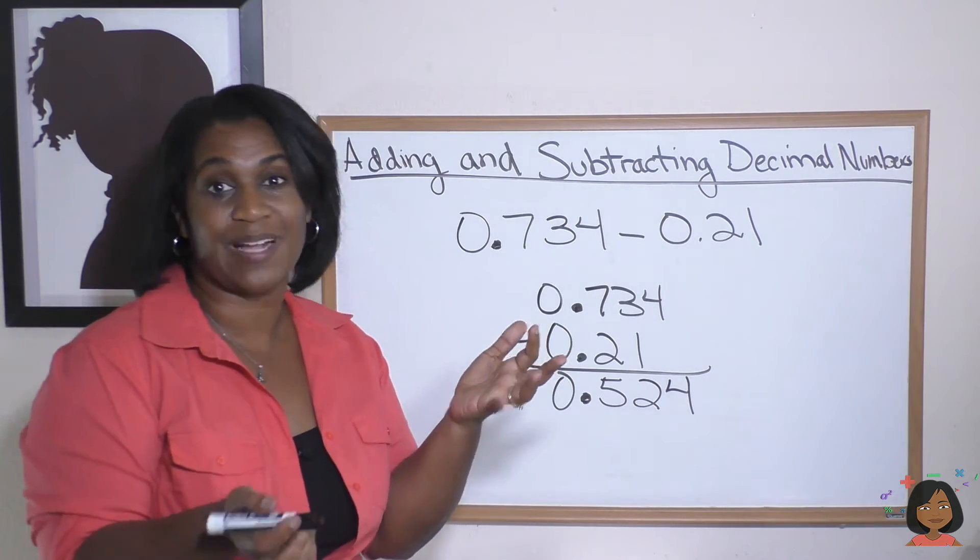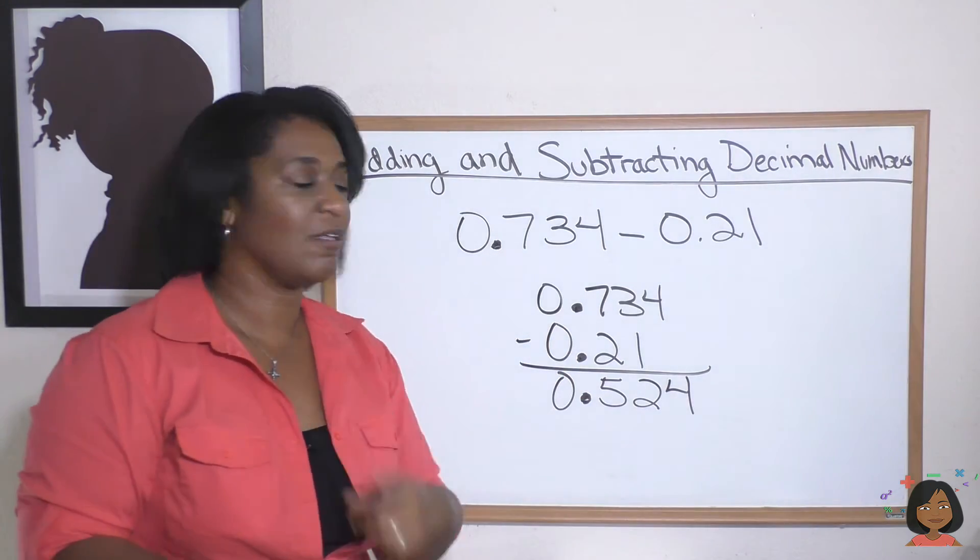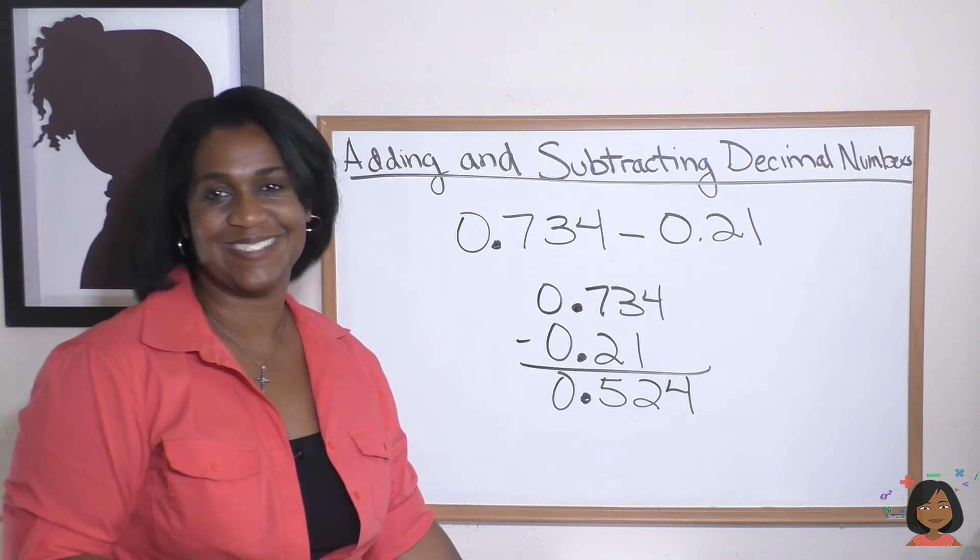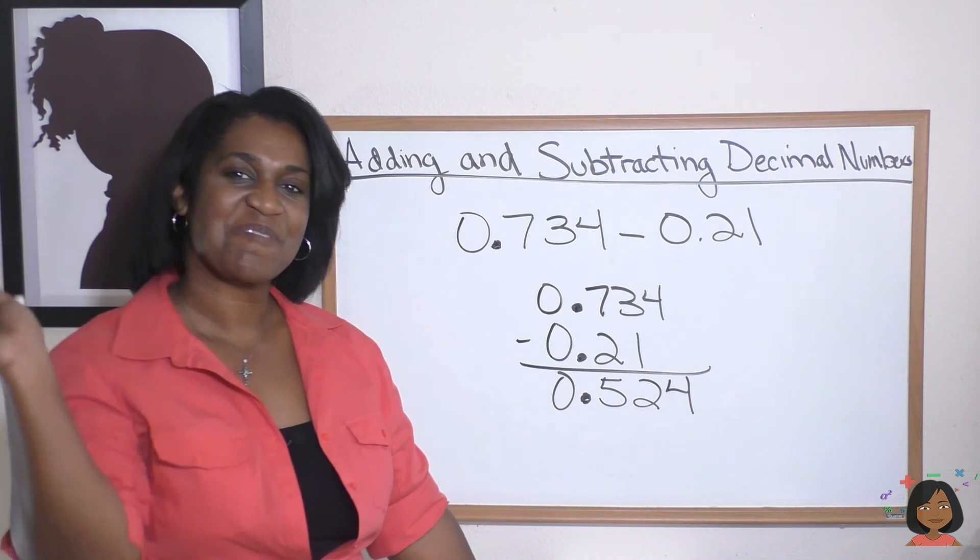Adding and subtracting decimal numbers is really just like adding and subtracting regular numbers with one rule: line up your decimals. That's it. All right, I'll see you next time. Bye bye!